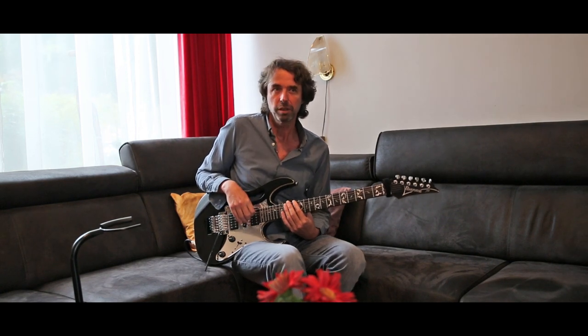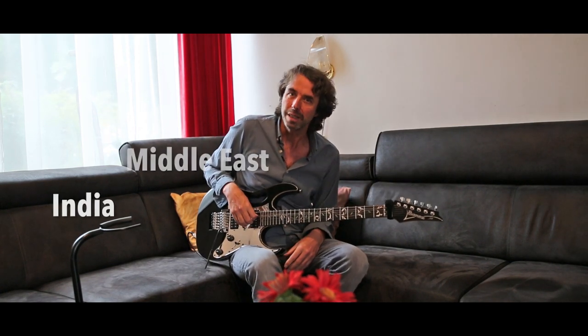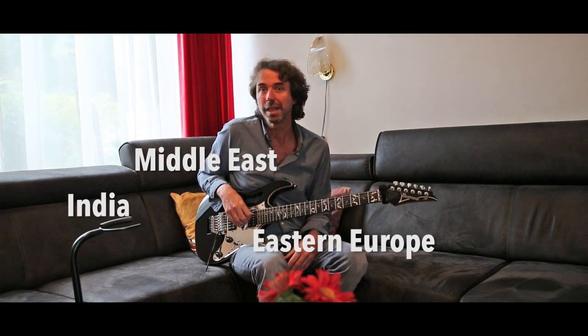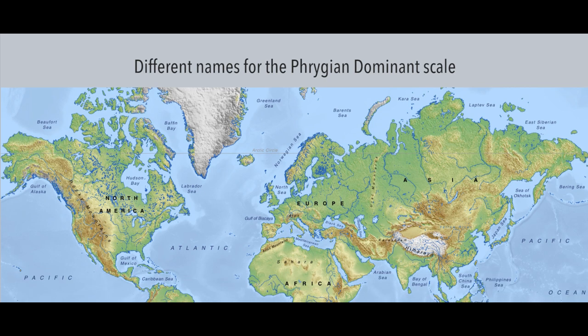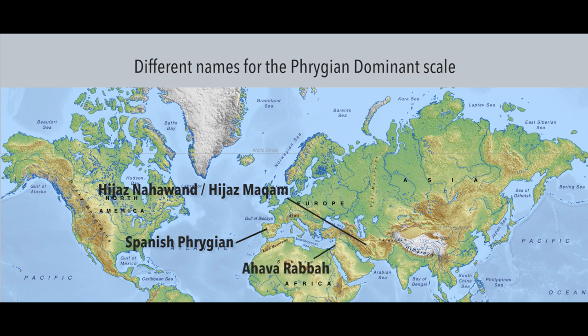This scale is used a lot in metal music, but it's also a scale used in ethnic musical styles. The Phrygian dominant scale occurs in Indian, Middle Eastern, Eastern European, Central Asian, and Flamenco music. The scale goes by different names, like Spanish Phrygian or Major Phrygian. In the Middle East it's called Diyaz Nahawant or Hiyaaz Makam. In Israel it's called the Ahava Rabah, and in Indian raga it's known as the Hiyaaz Bayraf.